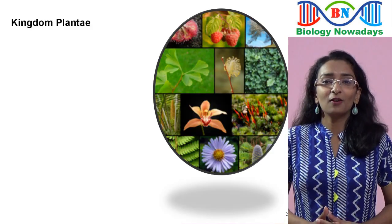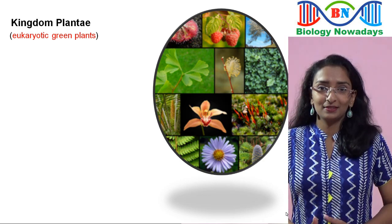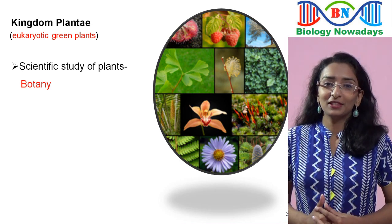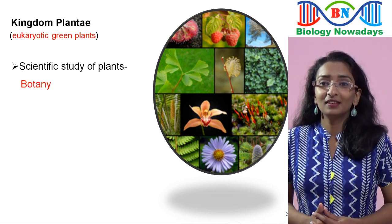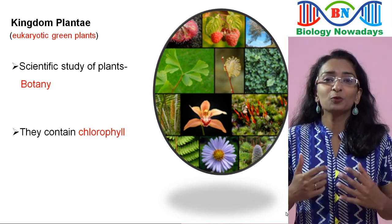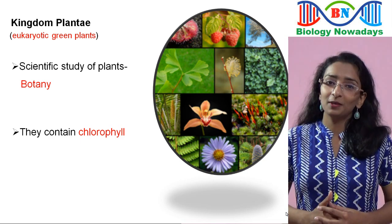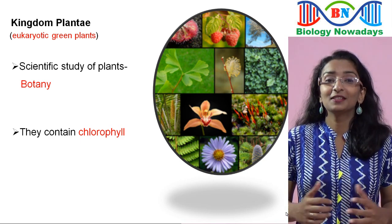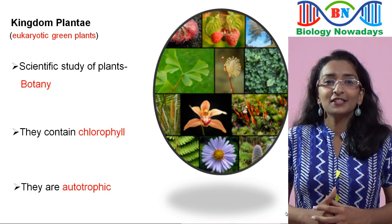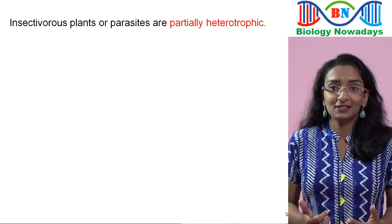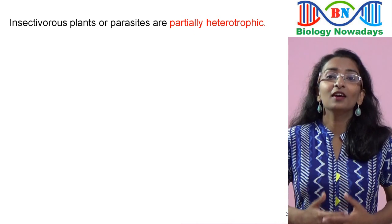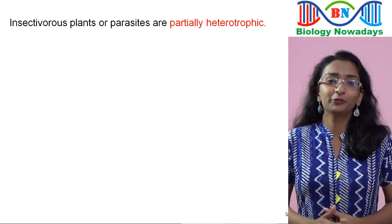Kingdom Plantae consists of eukaryotic green plants. The scientific study of plants is called botany. The green plants of Kingdom Plantae contain the green pigment chlorophyll, and due to the presence of chlorophyll they are able to prepare their own food by a process called photosynthesis. This means that they are autotrophic. But a few members such as insectivorous plants and parasites are partially heterotrophic, which means that sometimes they also depend on other living organisms for food.